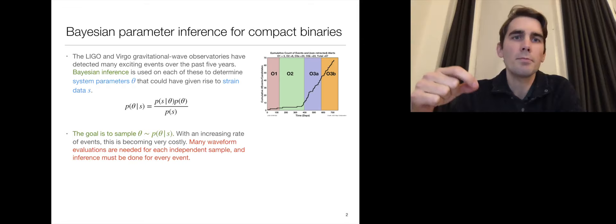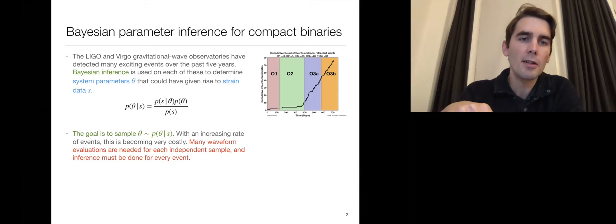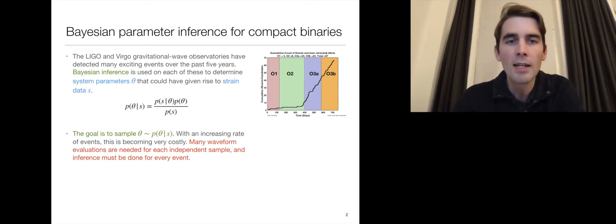The basic approach is to use a standard sampler like Markov chain Monte Carlo and move around parameter space, generate a waveform for each set of parameters and compare it to the strain data. In this way, you build up a distribution over the parameters.